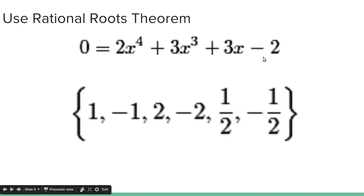And then we can use the rational roots theorem, which says that the possible rational zeros that you can have for a polynomial are the factors of the last term divided by factors of the first term. So the factors of the last term are 1, negative 1, 2, and negative 2. And the factors of the first term are 1, negative 1, 2, and negative 2.